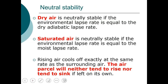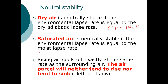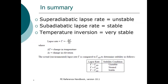We can also talk about neutral stability. Dry air is neutrally stable if the environmental lapse rate equals the dry adiabatic lapse rate — then it doesn't want to rise or fall. For saturated air, we use the moist adiabatic lapse rate, and the air parcel neither tends to rise nor sink. We also use the term super-adiabatic lapse rate, which is unstable, and sub-adiabatic, which is stable.